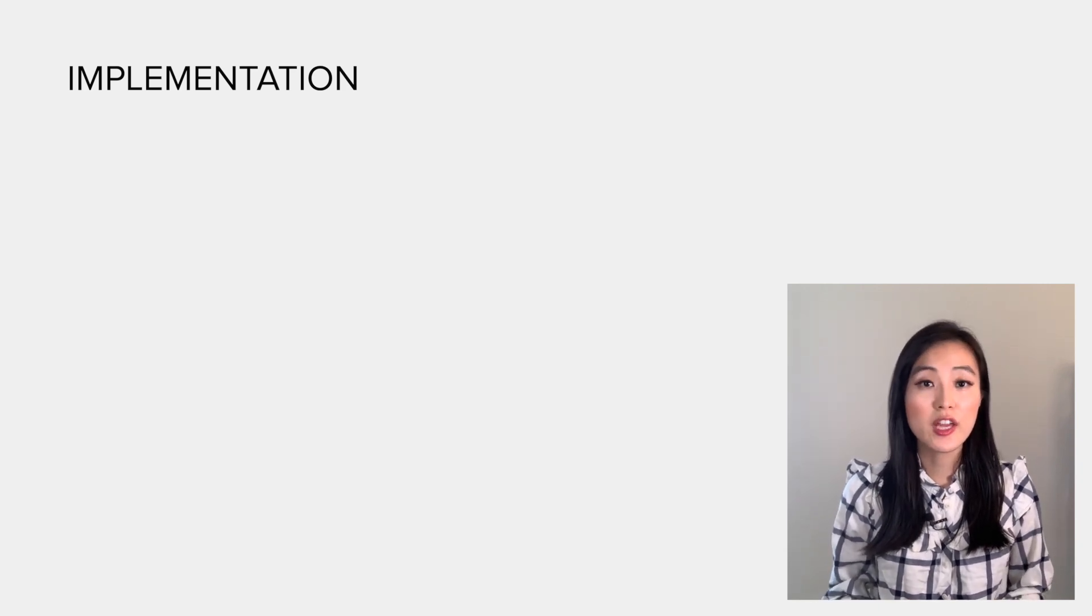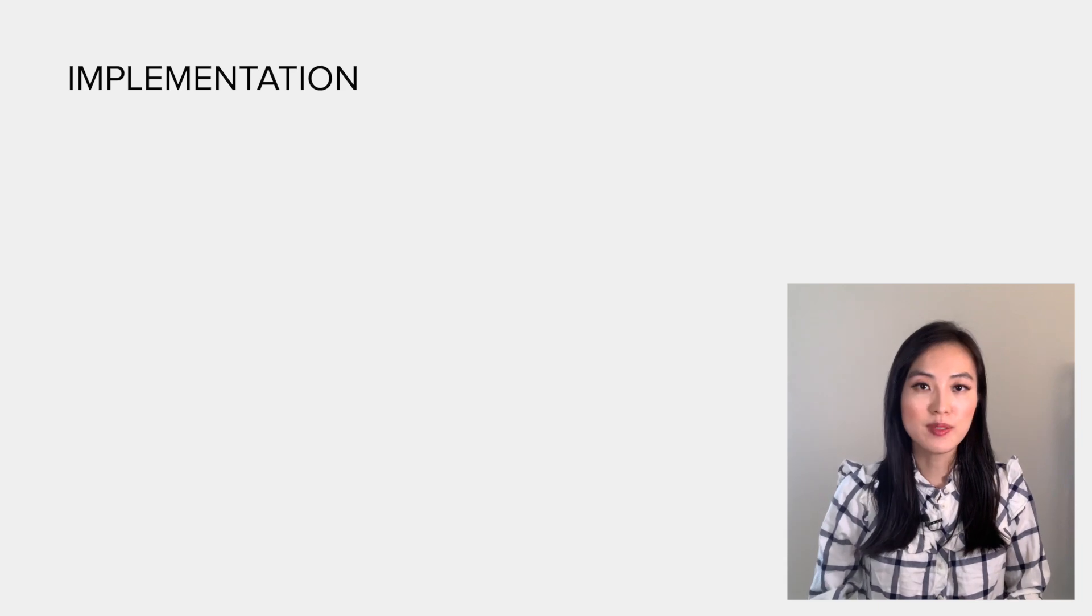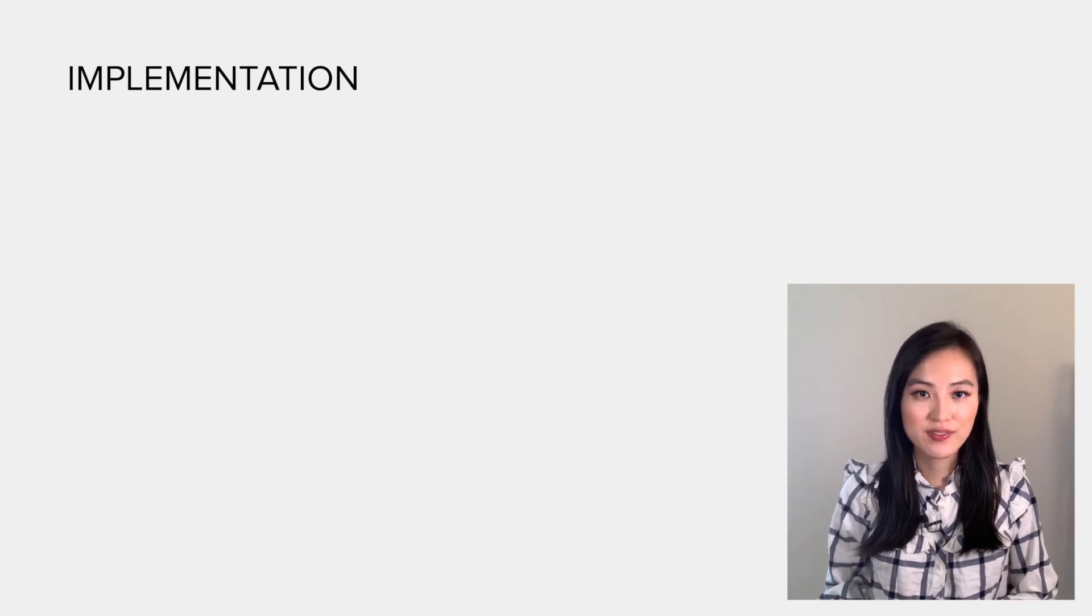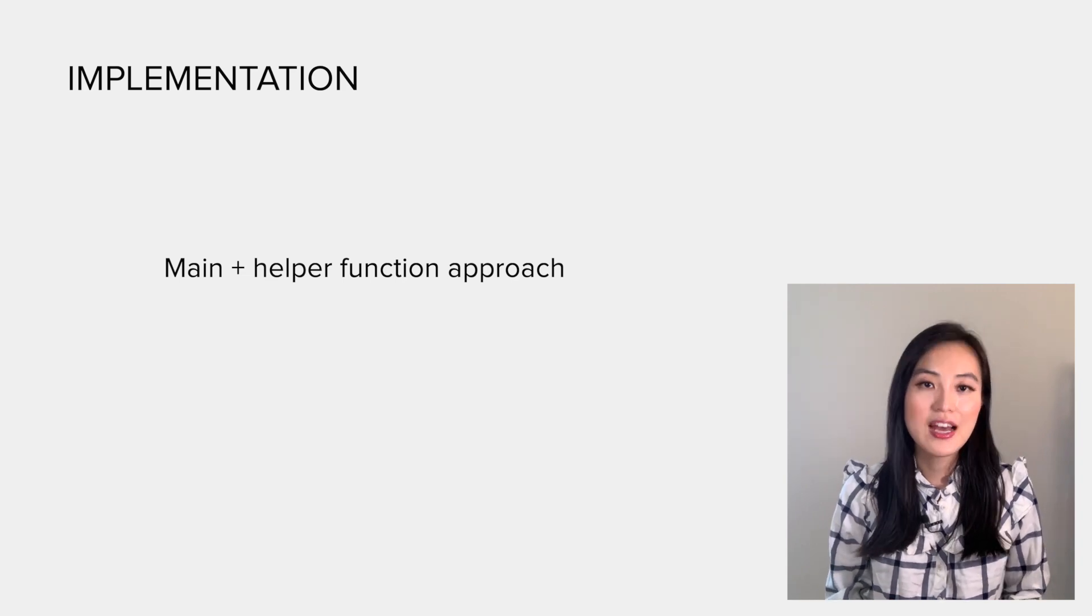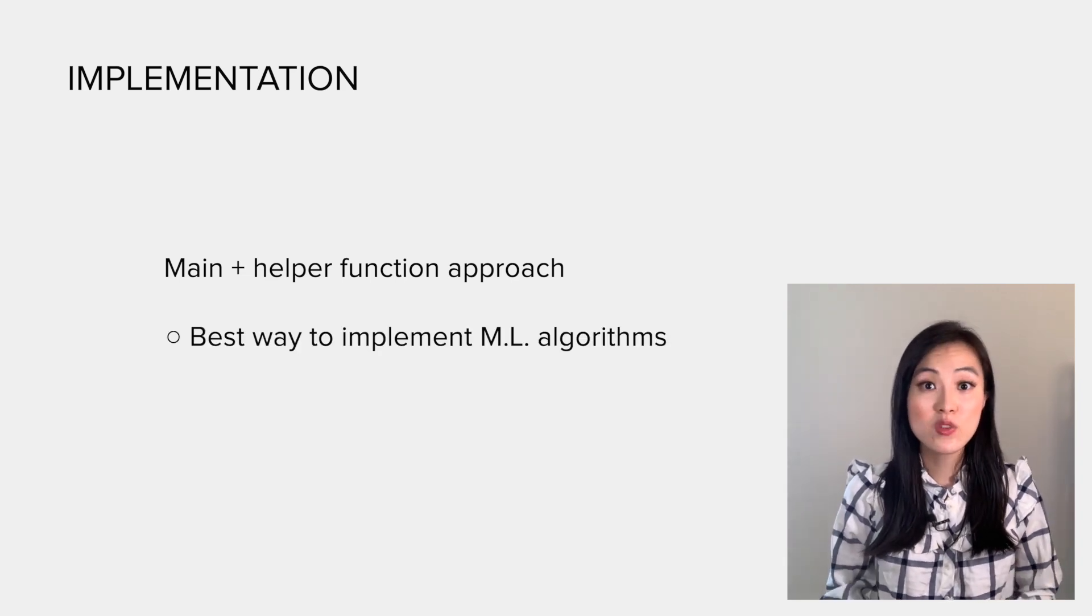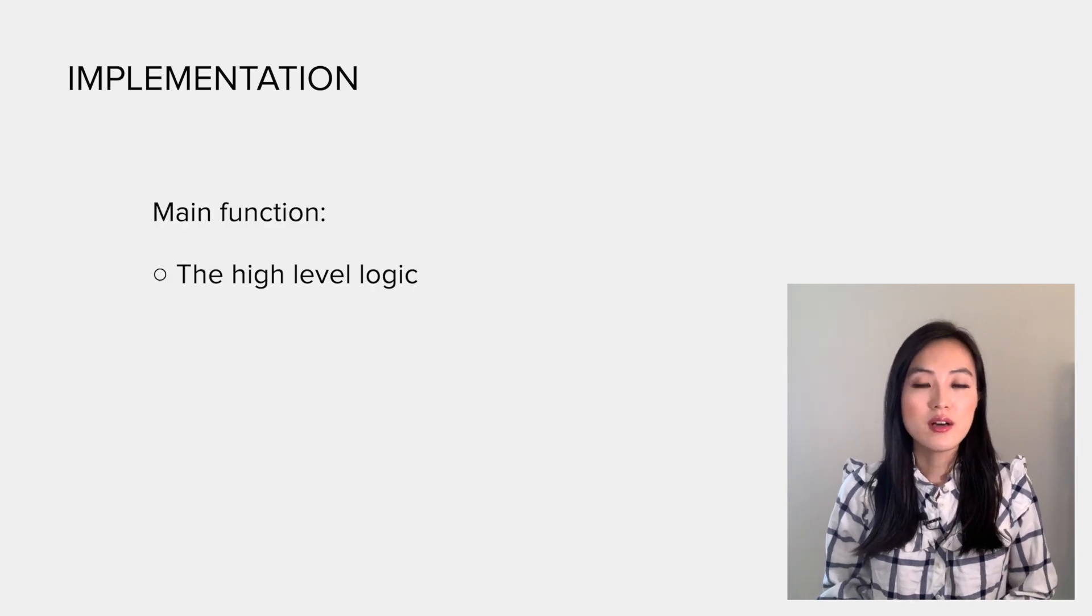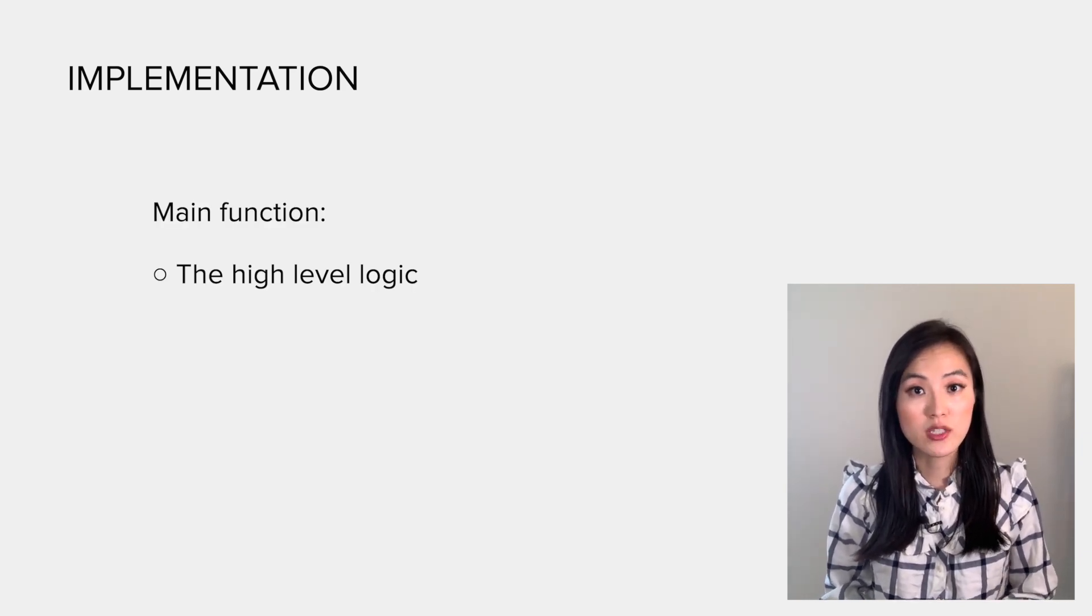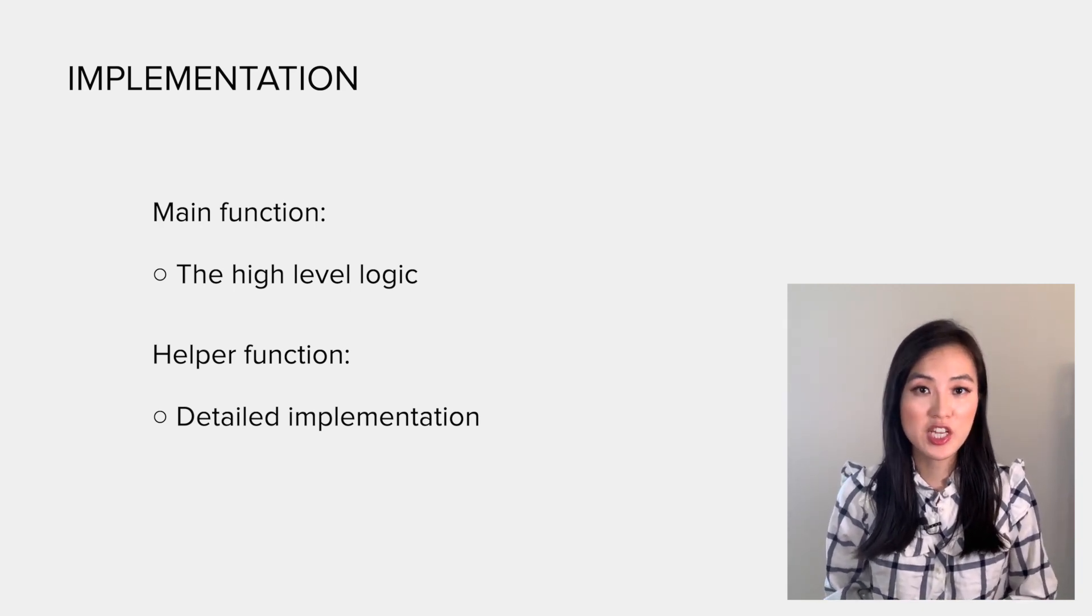Now you understand not only the gradient descent algorithm but also how to compute the gradient for each parameter. Let's dive into the most interesting part: the implementation of linear regression. I'm gonna use the main plus helper function approach to implement it. I consider this approach as the best way to implement a machine learning algorithm.